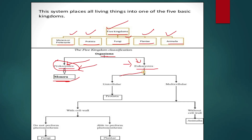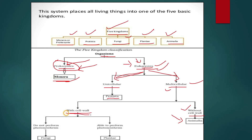All living organisms in the eukaryotic section are further differentiated into two groups: unicellular and multicellular. Unicellular eukaryotic organisms are placed in the Protista kingdom. Multicellular eukaryotic organisms are then further classified based on whether they have a cell wall or not. Organisms without a cell wall are placed in Animalia. Those with a cell wall are classified based on photosynthesis — if they do not perform photosynthesis, they are placed in the Fungi group.